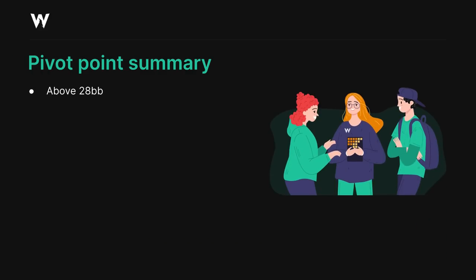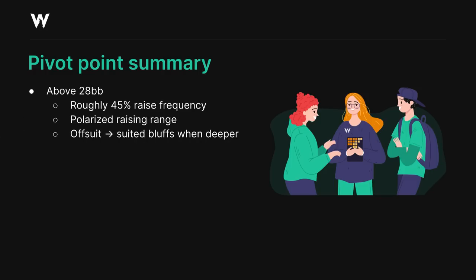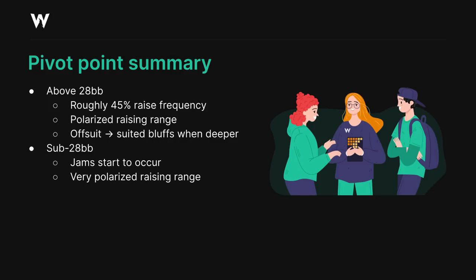When we're above 28 big blinds we have a high raise frequency versus a limp, with a polarized raising range which leans on offsuit bluffs at most stacks, but includes a few suited bluffs once we get deeper. Below 28 big blinds we start jamming over a limp at some frequency, while our raising range becomes heavily polarized to combat the limp jam, with our bluffing combos coming from the weakest offsuit hands and our value hands being very happy to call a limp jam.